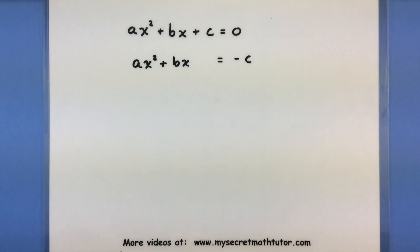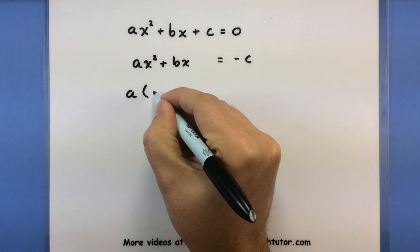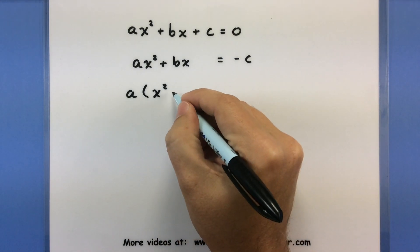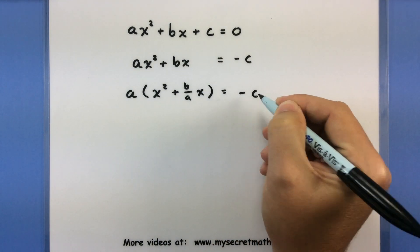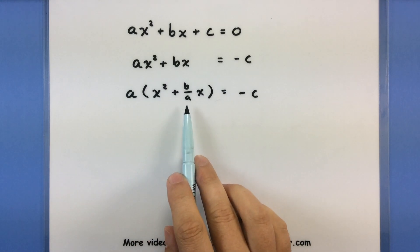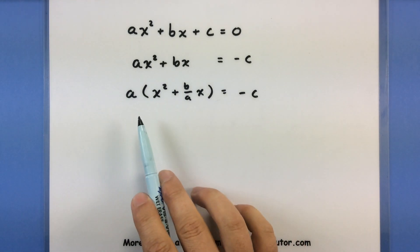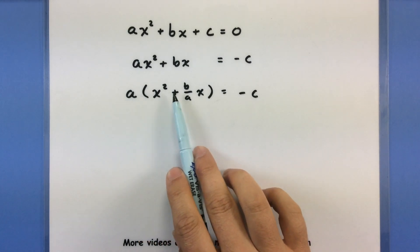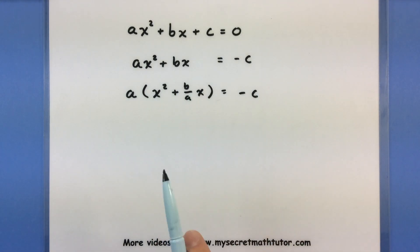Now I also like to isolate the x² term and make sure it doesn't have any coefficients out front. So I'm going to factor out a from both terms, giving me a(x² + (b/a)x) = -c. When you see a step like that, it's intuitive — the a comes out — but you might wonder why a doesn't show up over here as a whole number. It ends up as a fraction. A good way to double-check: if you put the a back in, a times x² gives ax², and a times b/a cancels the a, leaving just b. So that is the correct factoring.